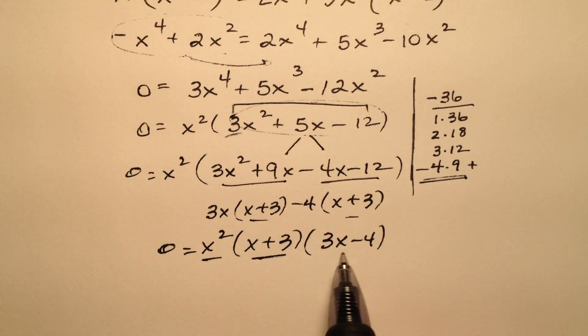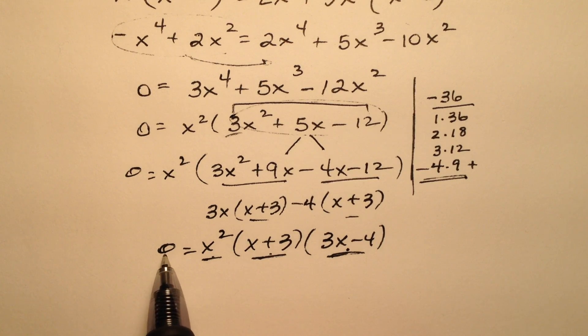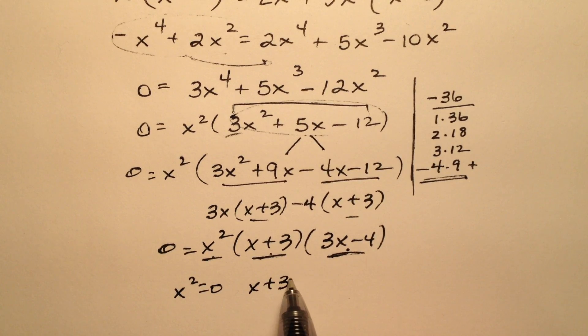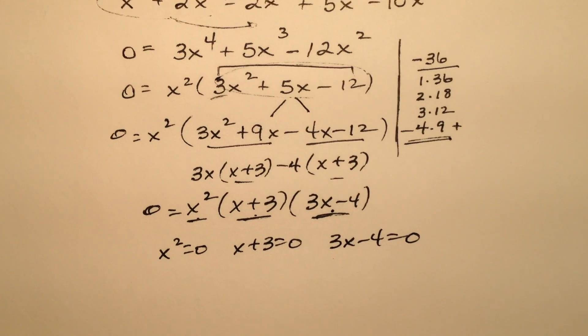The zero property of multiplication tells us we need to take each one of these factors and set it equal to 0. So x squared equals 0, x plus 3 equals 0, and 3x minus 4 equals 0.